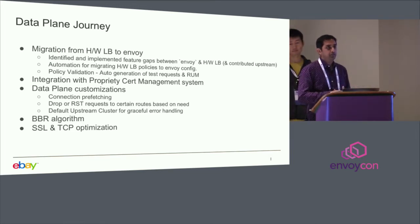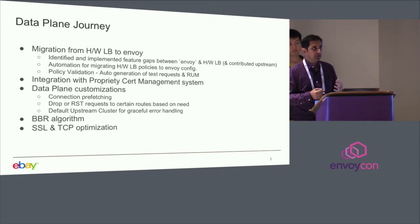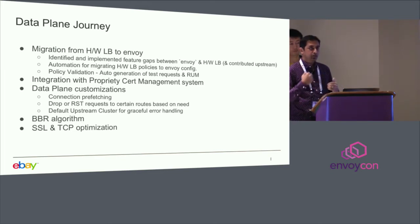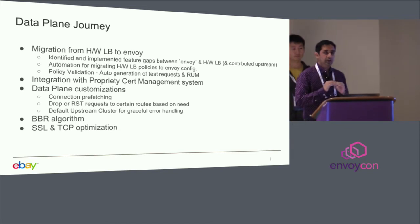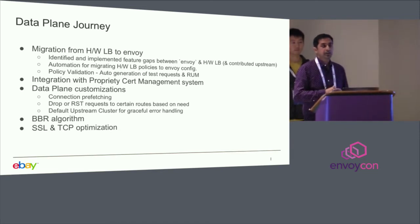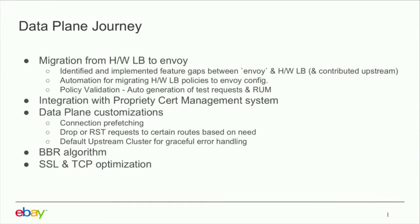One major requirement for an edge use case is better connectivity from the POP to the data center. On Envoy, we were able to implement connection prefetching based on dynamic traffic rate. If the traffic rate is higher, you pre-create or pre-fetch connections with SSL so that no requests are ever queued. After implementing this, we were able to see that the queued connection count went down to zero, delivering a much better experience to users.